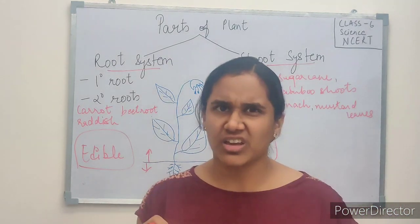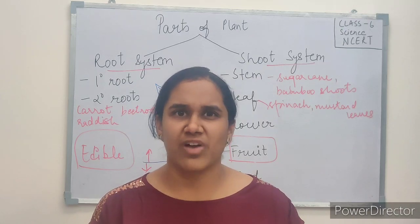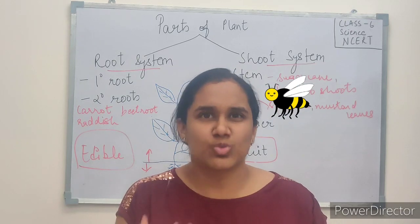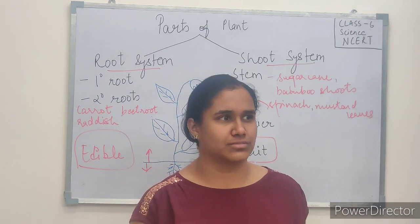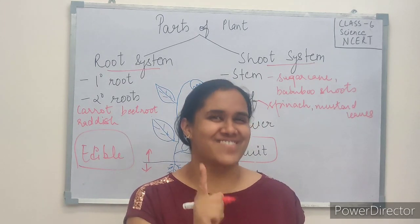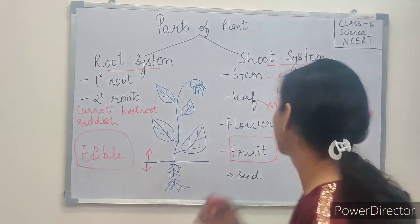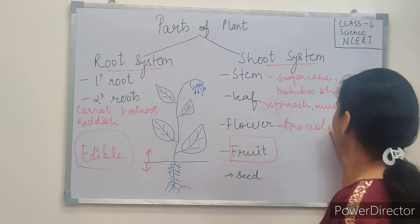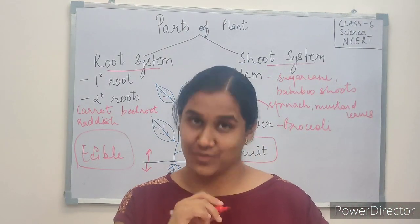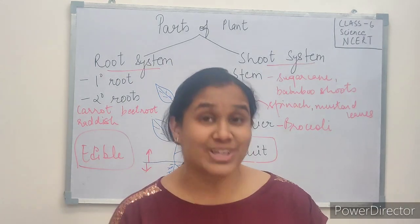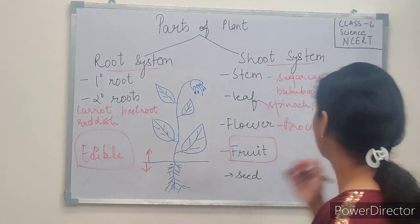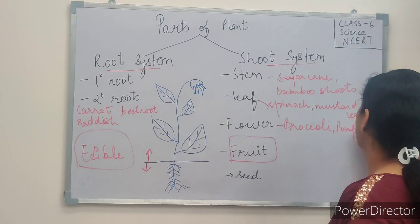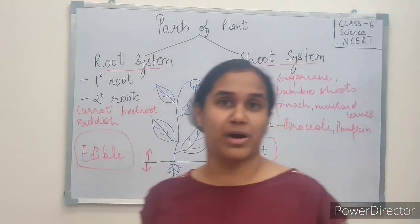What about flowers? I thought flowers are only for bees and butterflies to sip nectar out of them. Do we humans also eat flowers? Yes! And children, that is your favourite — broccoli! Broccoli is a flower which we eat. Well, maybe we do not always like it, but it is very healthy and you should eat it. Apart from this, we have pumpkin flower, which is eaten in different parts of the country.